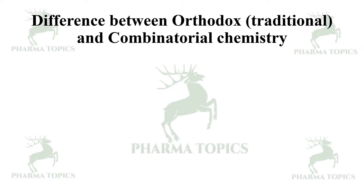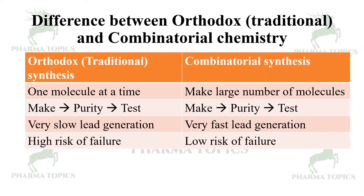Comparing traditional or orthodox methods of synthesis with combinatorial chemistry: orthodox synthesis synthesizes one molecule at a time, whereas combinatorial chemistry makes a larger number of molecules. Traditional methods are very slow in production of leads, whereas combinatorial chemistry is very fast. The risk of failure is high with traditional methods, whereas in combinatorial chemistry the risk of failure is very low.